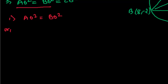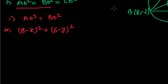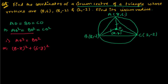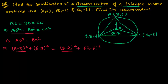Using the distance formula: AO² = (8 - x)² + (6 - y)², and BO² = (8 - x)² + (-2 - y)². Since both have the (8 - x)² term, we can cancel it from both sides.